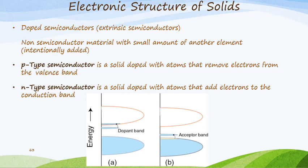We also have doped semiconductors — these are extrinsic semiconductors, meaning a non-semiconducting material with a small amount of another element added on purpose. There are two types: a p-type semiconductor, which is a solid doped with atoms that remove electrons from the valence band, and an n-type semiconductor, which is a solid doped with atoms that add electrons to the valence band.